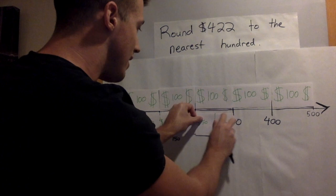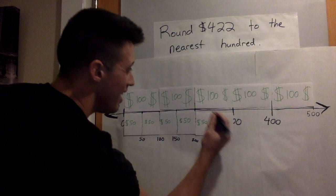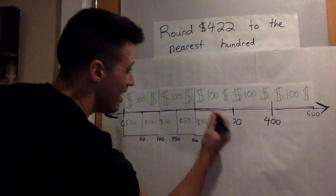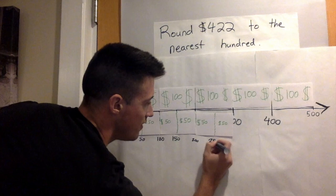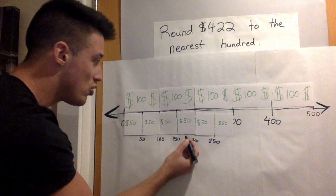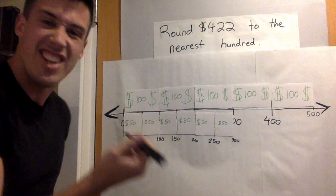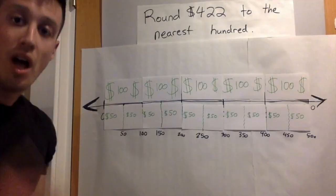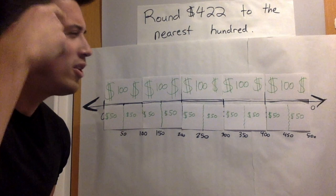With all of these groups of $50, they give me my midpoints. In between $200 and $300, the midpoint is $250. I can count: one, two, three, four, five groups of $50 — $50, $100, $150, $200, $250 — and $300 would be next. I can just keep going until I get to $500.